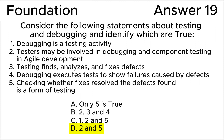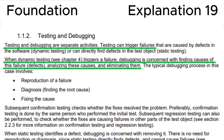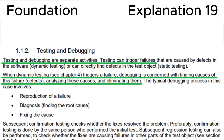It's easy to make a mistake on this question by believing that statement 2 is false and choosing answer A. Looking at the ISTQB syllabus definition: testing and debugging are separate activities. Testing can trigger failures. When dynamic testing triggers a failure, debugging is concerned with finding the causes of this failure or defects, analyzing these causes, and eliminating them.